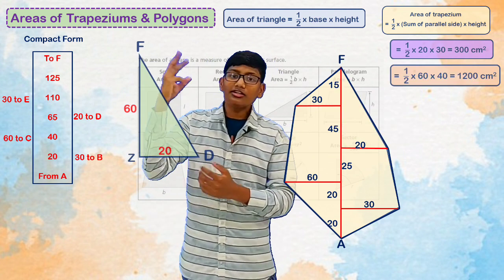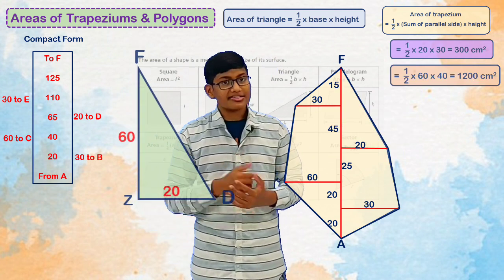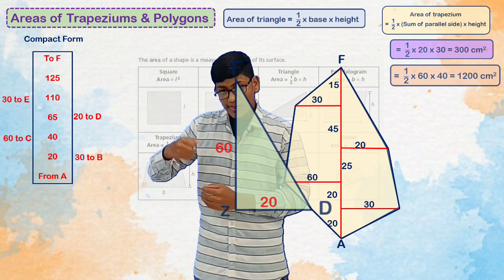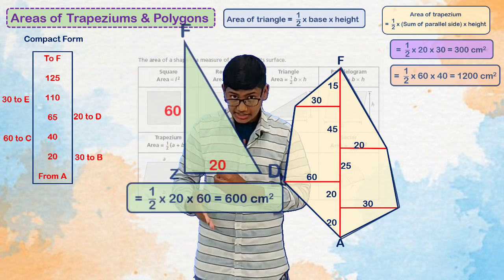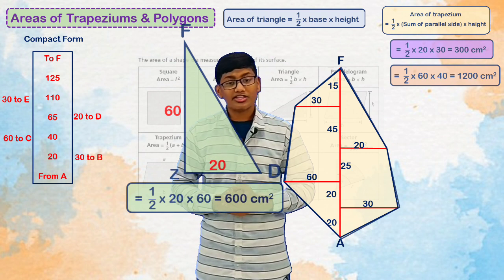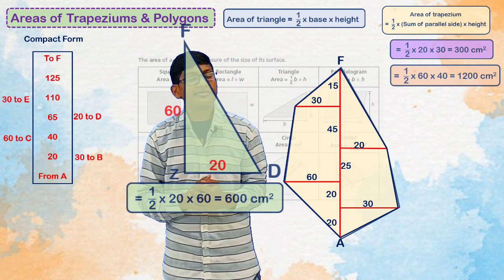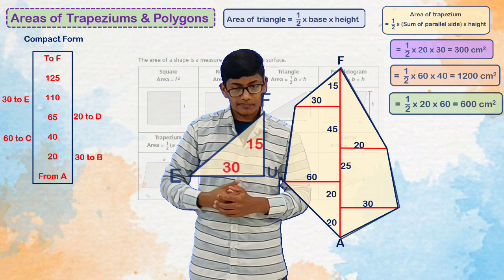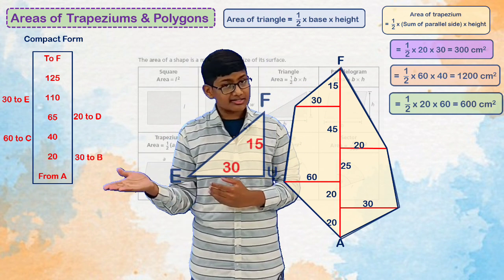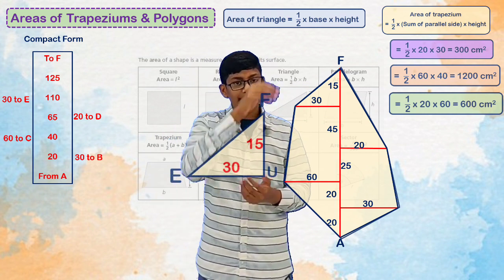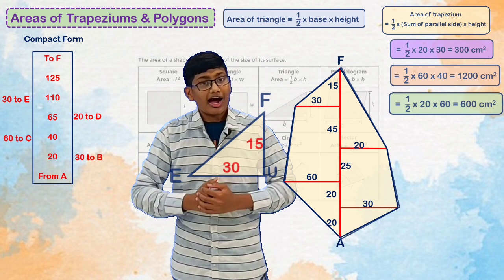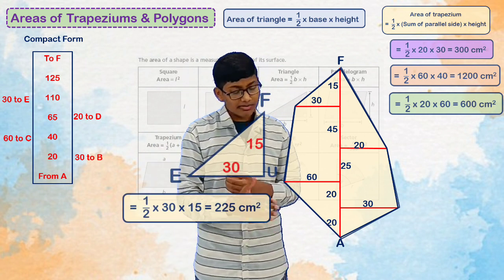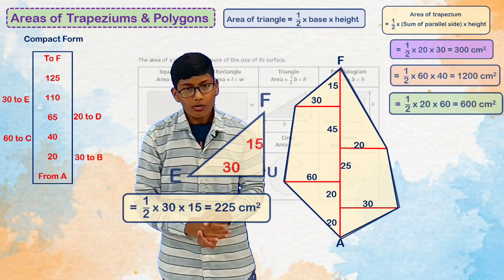The third triangle has base 20 cm and height 60 cm. Half into 20 into 60 equals 600 cm². Now for the last right triangle: it has base 30 cm and height 15 cm. Half into 30 into 15 gives 225 cm².